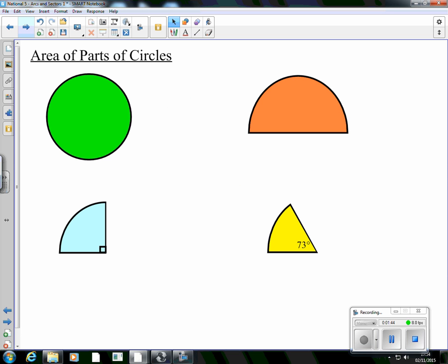Now we're going to go back a little bit and look at area of parts of circles. The green, the orange and the blue shape, we should be able to find the area of already. What we want to do is extend that idea to all parts of circles, not just when we've got a full circle, a half circle or a quarter circle. We want to extend it so no matter what part of a circle we have, we can find the area.